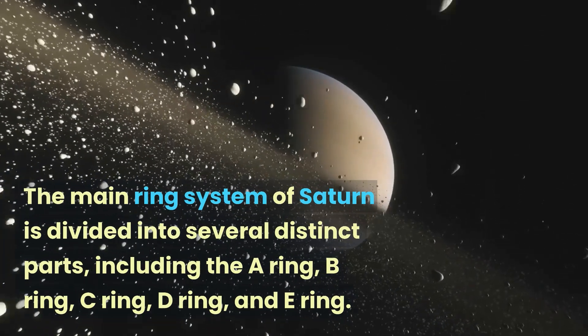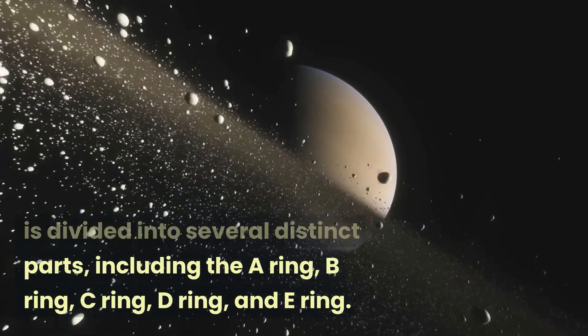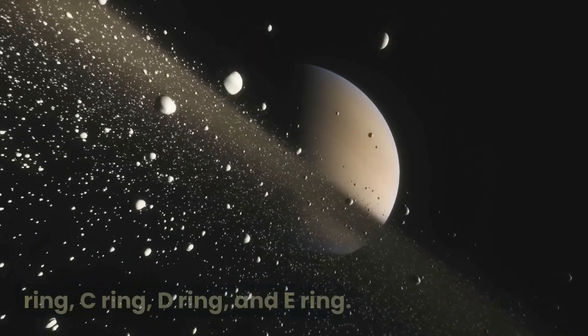The main ring system of Saturn is divided into several distinct parts, including the A ring, B ring, C ring, D ring, and E ring.